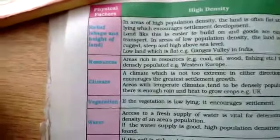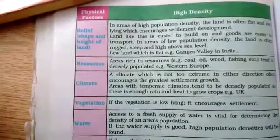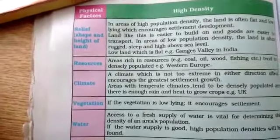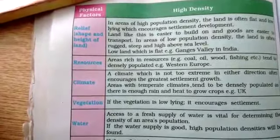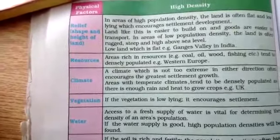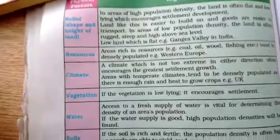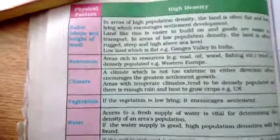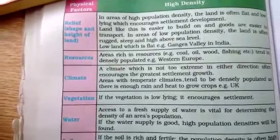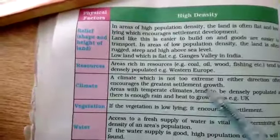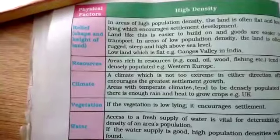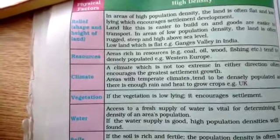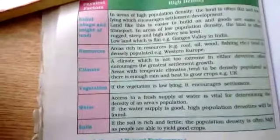Another reason for high density population is resources. Definitely, an area that is rich in resources will attract people — they will migrate to that land and easily settle down there. One example is Western Europe. Climate is also a basic factor.